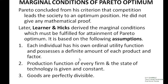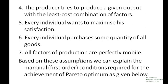These marginal conditions are based on certain assumptions. Number 1, each individual has his own ordinal utility function and possesses a definite amount of each product and factor. Number 2, production function of every firm and state of technology is given and constant. Number 3, goods are perfectly divisible. Number 4, the producer tries to produce a given output with the least cost combination of factors. Number 5, every individual tries to maximize his satisfaction. Number 6, every individual purchases some quantity of all goods. And number 7, all factors of production are perfectly mobile.